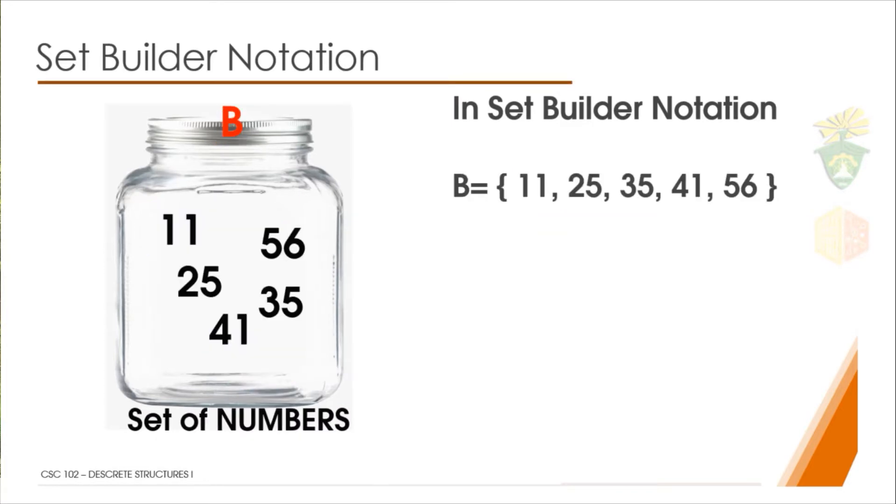Another example is the set B, which will look like this. These are the elements of the set B. If we write it in set builder notation, we have all the elements enclosed in curly braces, equated with the name of our set, which is B.